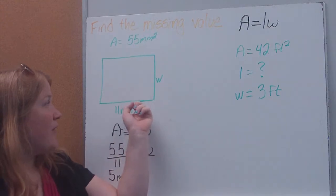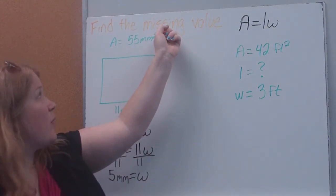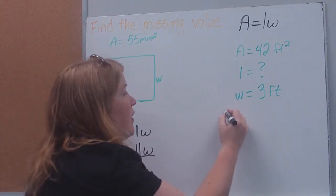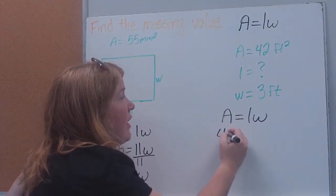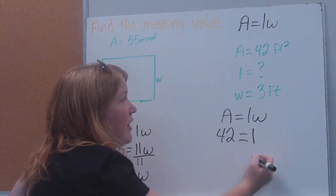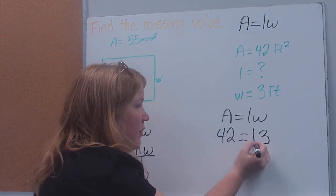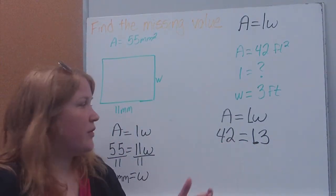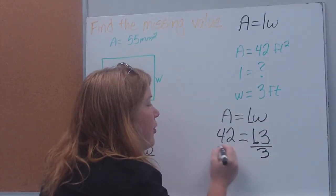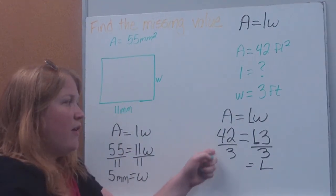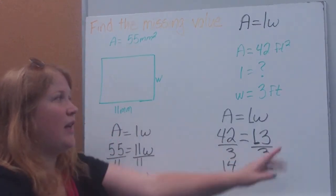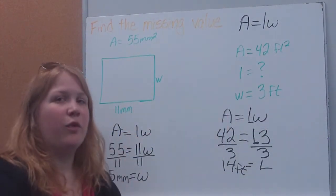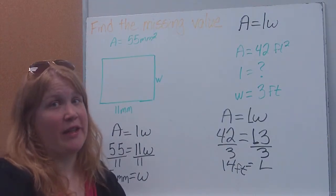And again, we can go back and check by plugging it in. 5 times 11 gives me 55 millimeters squared. Over here, you'll notice we didn't draw a square. Sometimes I might just give you the letters here. It's still the same idea. So area is equal to length times width. Let's plug in what we know. We know that the area is 42 square feet. I don't know what the length is, but I know that the width is 3 feet. Again, let's make that a capital L so we don't confuse it for a one. So I have 3 times L is equal to 42. So how am I going to get the L by itself? It's going to be my inverse operation. I'm left with length. 42 divided by 12 gives me 14. Make sure that we have our proper labels. This would be feet. So this would be a rectangle that is 14 feet by 3 feet, would give me an area of 42 square feet.